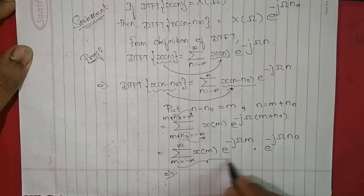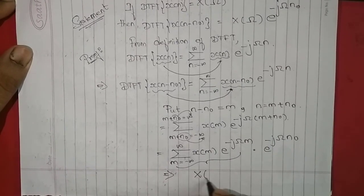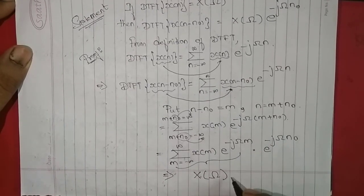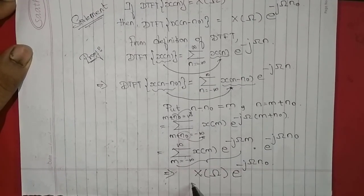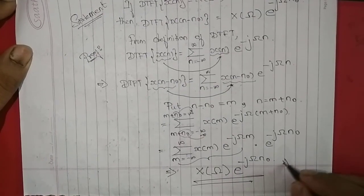So from the definition of DTFT, this term we call it as capital X(ω) times e^(-jωn0). So this is what we wanted to do.